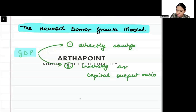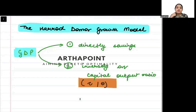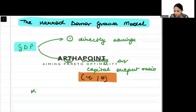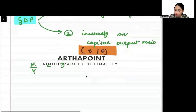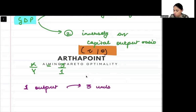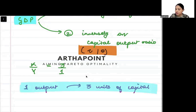The capital-output ratio can be represented using small c or theta. Both represent the capital-output ratio of the economy. Capital-output ratio basically tells us how much capital is required to produce one unit of output — capital divided by output. So if I say capital-output ratio is 3, it means 3 is to 1: to produce one unit of output, I require 3 units of capital.